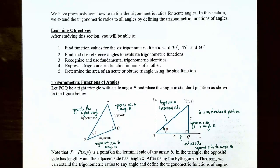We also found and used reference angles to evaluate trigonometric functions. In this video we're going to talk about how to recognize and use fundamental trigonometric identities, express a trigonometric function in terms of another, and also determine the area of an acute or obtuse triangle using the sine function.